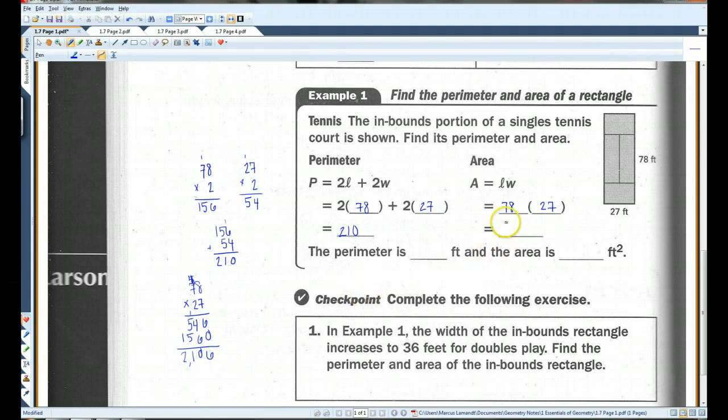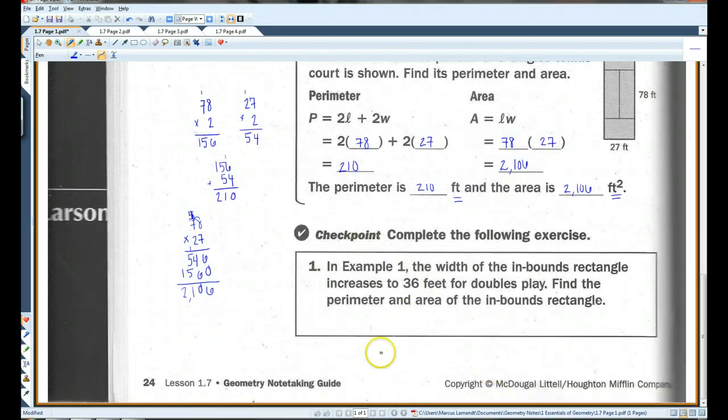So, 2,106. So, the perimeter is 210 feet, and the area is 2,106 feet squared. Notice that the perimeter is always going to be regular units, and the area is always going to be square units. Alright, you guys go ahead and try this one. Let's go on to page 2.